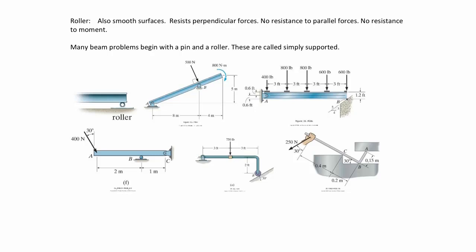The next support is called a roller. Rollers are free to move in the lateral direction, so they will resist motion only in one direction — perpendicular to the contact surface. If you were to lift the roller up, it wouldn't have the ability to pull back down. But if you push on it, it has the ability to push back. It has no resistance to motion side to side, and no resistance to moment either.